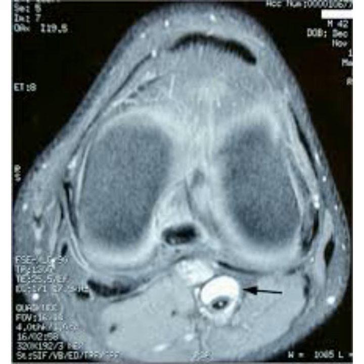The condition usually affects the popliteal artery, which supplies blood to your knee and muscles in your lower leg. In about 15% of cases, cysts form in blood vessels other than your popliteal artery. Sometimes cysts go away on their own, but surgery is usually the most effective treatment.